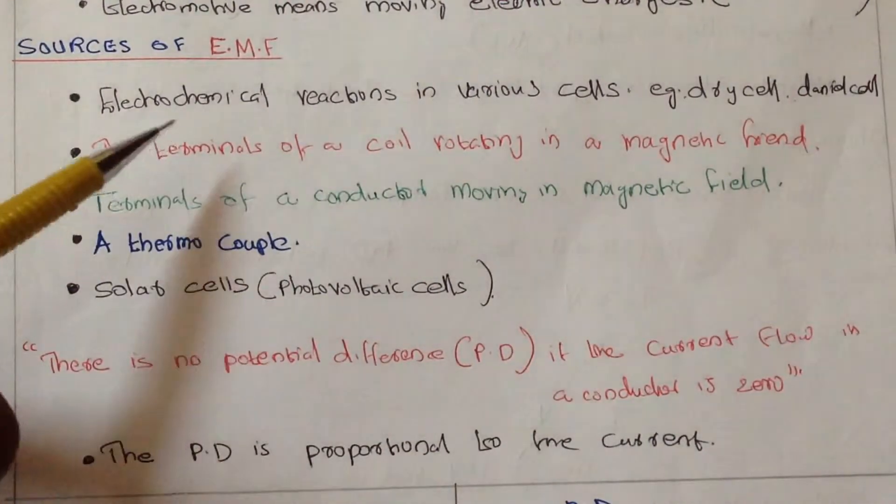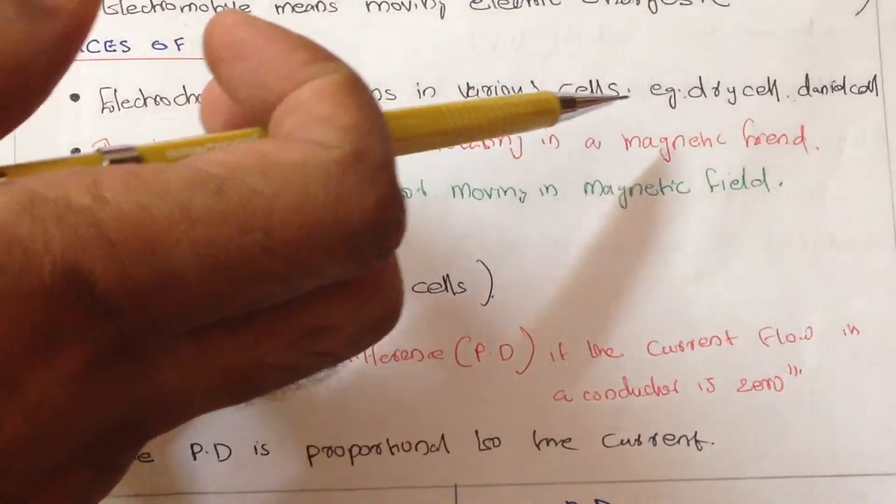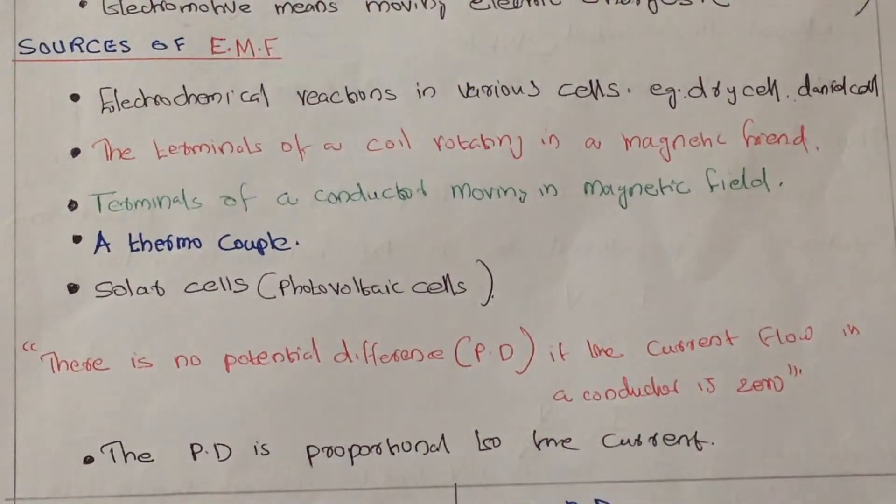So the first one is electrochemical reactions in various cells. Example: dry cell and Daniel cell. Due to electrochemical reactions in various cells, EMF can be produced.